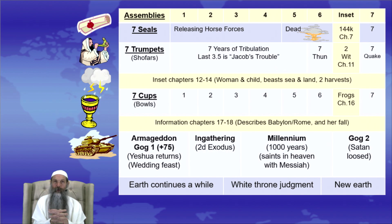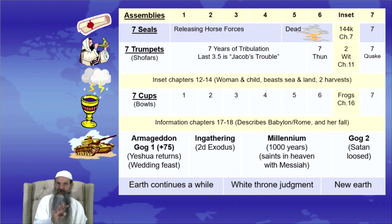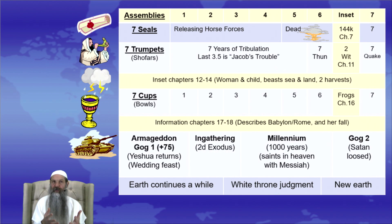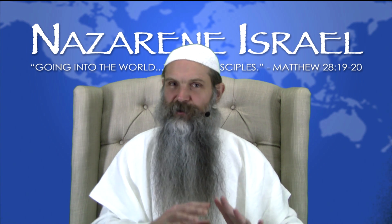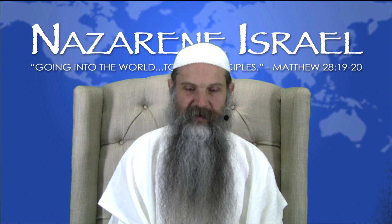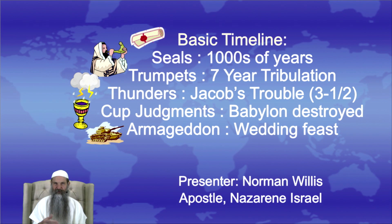We'll come back to the graphic, but what we want to see is: we have the seven assemblies, then seven seals that are opened. We're going to talk about the first four seals in this video, because they correspond to the four horses. Then we'll get into seals five, six, and seven in the next part of this video series. This is called the basic timeline.